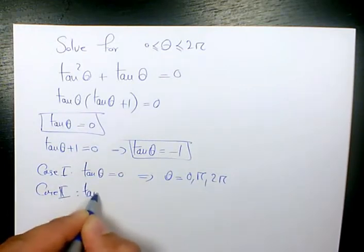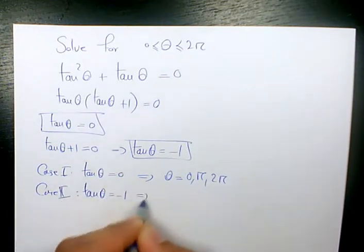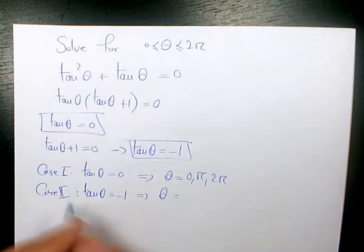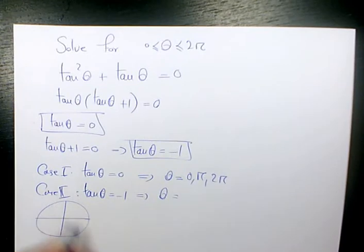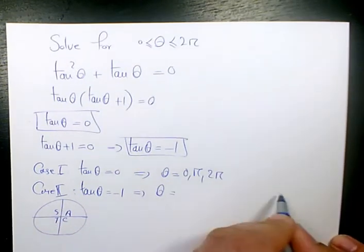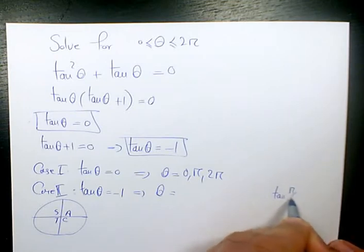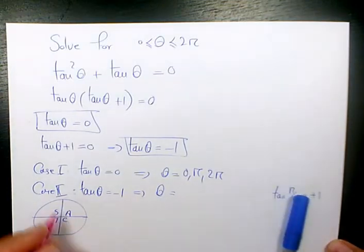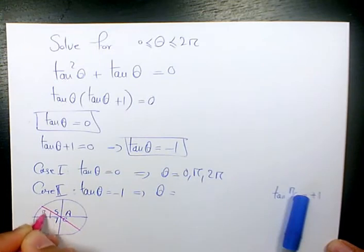when tan theta is negative 1, so the answers are going to be here, and I need to use CAST rule. We know tan pi over 4 is positive 1. So tan theta is going to be negative 1 when we are dealing with quadrant 2 and quadrant 4. You have pi over 4 here and pi over 4 here.